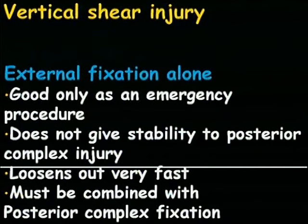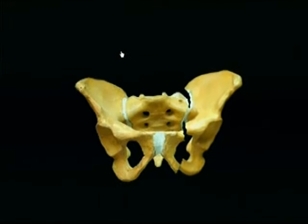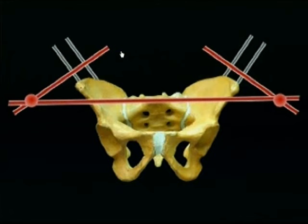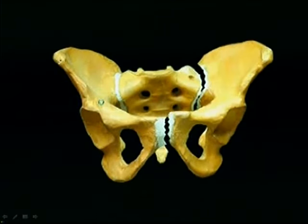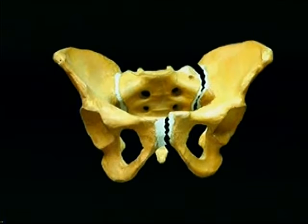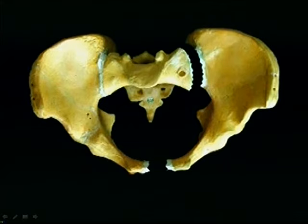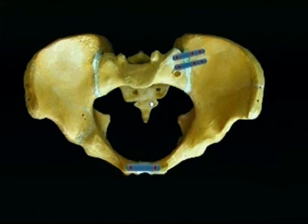Vertical shear injuries are the most notorious. External fixation can be done as an emergency procedure, but it is not good for definitive treatment as it will loosen. In the animation shown, after a vertical shear injury with external fixator applied and Schanz pins placed bilaterally with connecting rods, the patient is resuscitated, but this construct is still unstable and is not a definitive treatment. Only anterior fixation alone is also insufficient, as the posterior elements still have instability. Adequate stabilization for vertical shear requires posterior component fixation — two plates posteriorly are needed for good fixation.